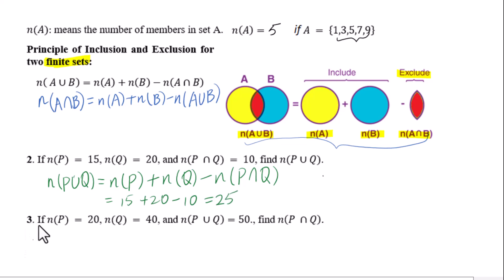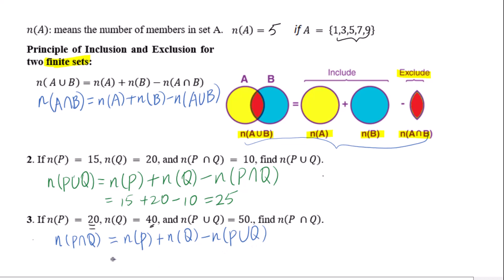Number three: according to the principle of inclusion and exclusion for two finite sets, n(P∩Q) equals n(P) plus n(Q) minus n(P∪Q). So we have 20 plus 40 minus 50, which equals 10.